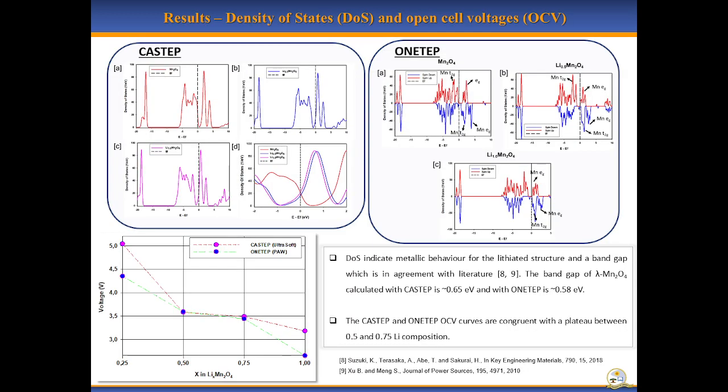Here we show results of density of states and the open cell voltages calculated with the traditional DFT code CASTEP and the linear scaling DFT code ONETEP to find parameters of the ONETEP code that correctly describe the lithium manganese oxide spinel structure. The band gap of the topotectically delithiated spinel structure was successfully determined by both codes and the findings are in line with experiments. We also note that the ONETEP and CASTEP open cell voltages are in good agreement. This then shows that the ONETEP code can accurately describe the electronic structure of the spinel system.